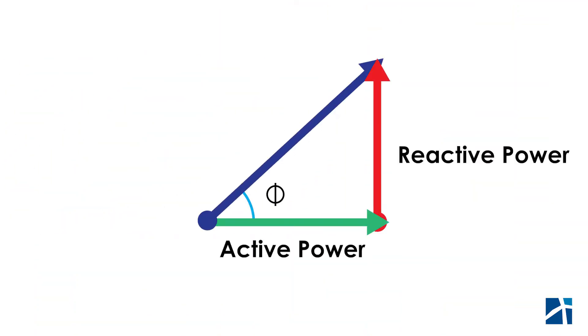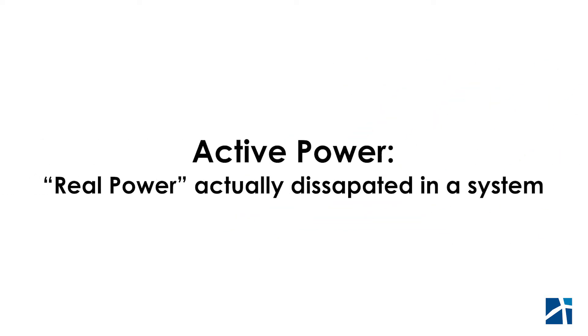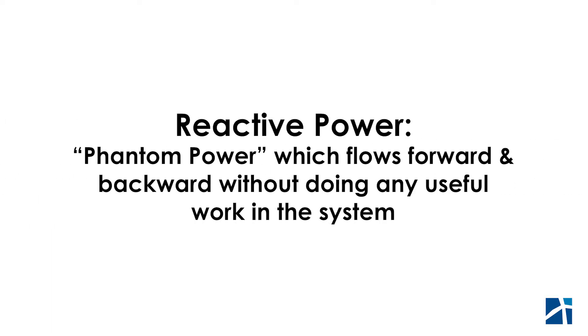So active, reactive, and apparent power are three types of power that are very confusing unless you break it down. So that's going to be the goal of today. Active power is defined as the real power actually dissipated in a system. Reactive power on the flip side is phantom power, which flows forward and backward without doing any useful work in the system.